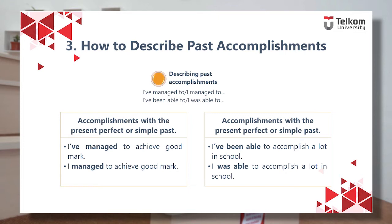When talking about past accomplishments and including a specific time, use the simple past — not the present perfect. For example: 'I was able to complete my degree last year.' It is not correct to say 'I've been able to complete my degree last year.' Now let's talk about accomplishments with the present perfect or simple past.